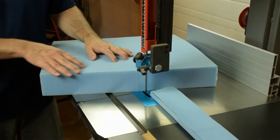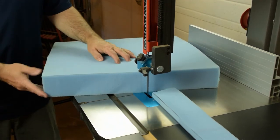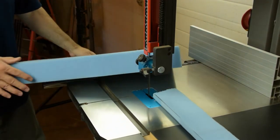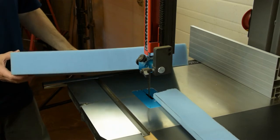The result is a nice consistent cut every time you take a piece of foam to the bandsaw. I just can't imagine a quicker or easier way to cut your upholstery foam.